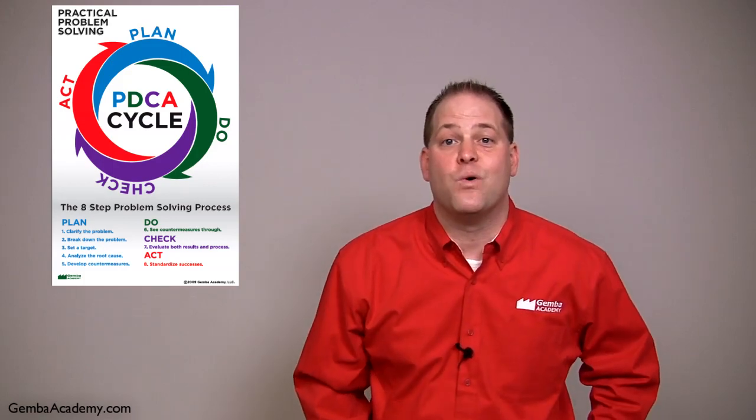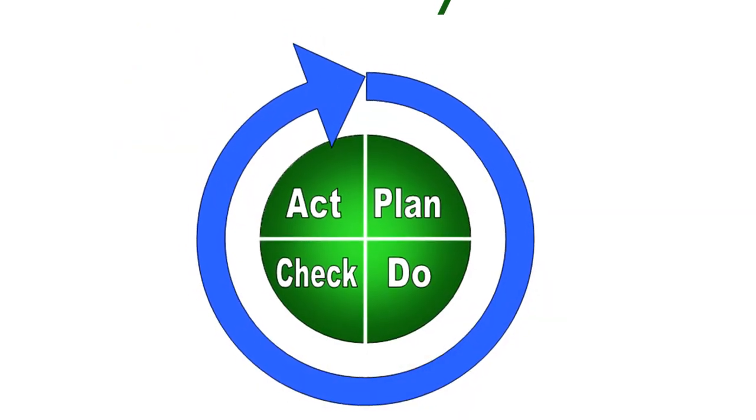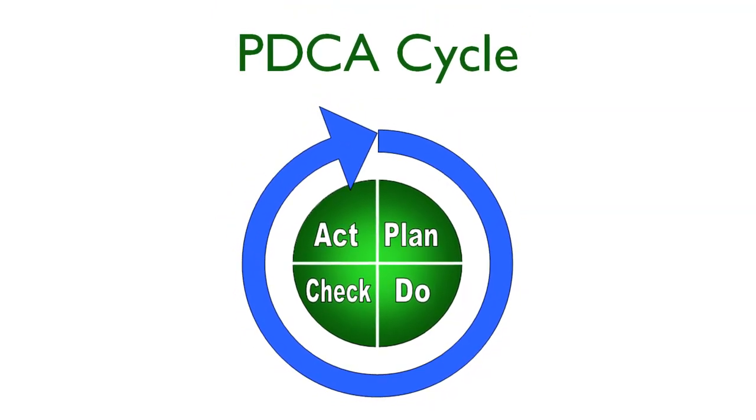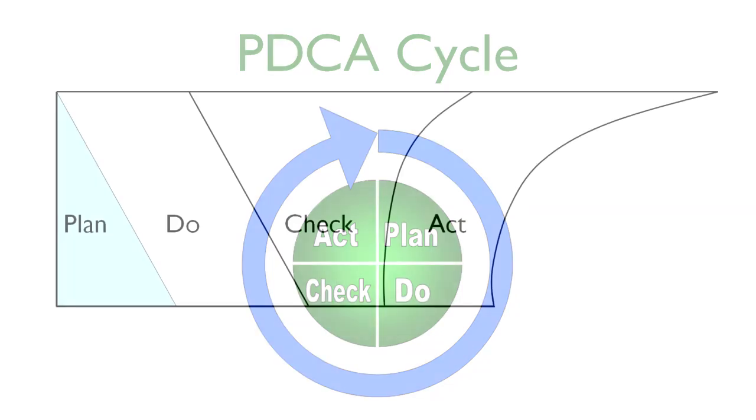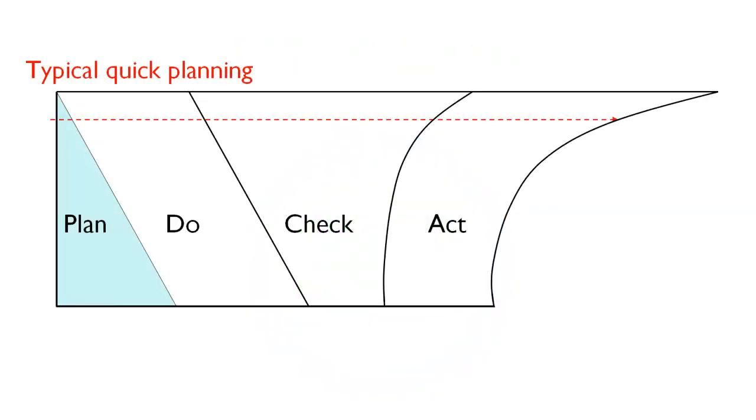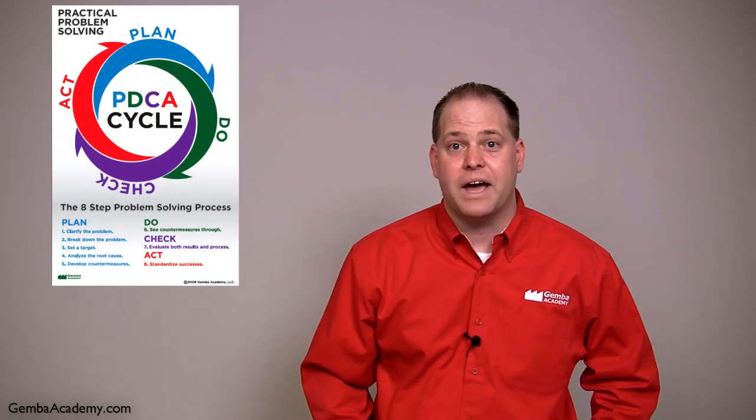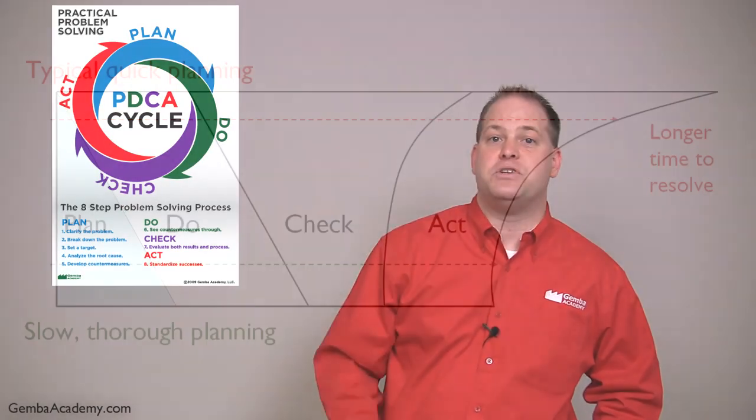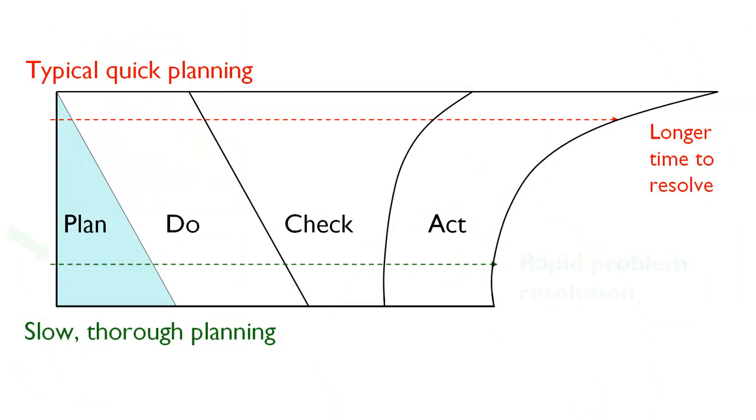Throughout this problem solving course, we'll be referring to the PDCA cycle, which stands for Plan, Do, Check, and Act. In particular, we'll be spending a lot of time on the first step, which is plan. Since the failure to plan properly, as shown on the top side of this diagram, almost always results in longer times to resolve the problem. In other words, this organization rushed through the planning phase only to pay for this hastiness in the check and act phases. On the other hand, when an organization takes the time to do slow, thorough planning as prescribed in a practical problem solving approach, they're far more likely to solve their problems faster and far more efficiently as we see here.